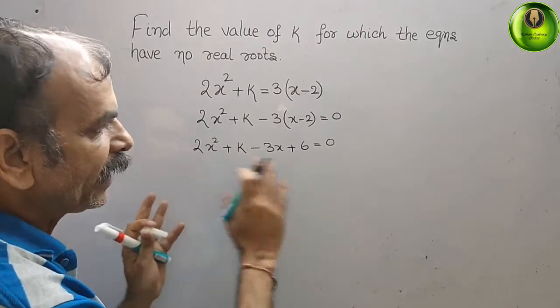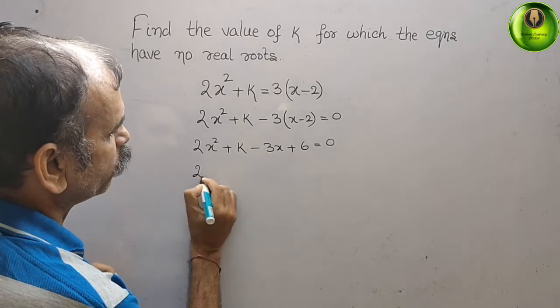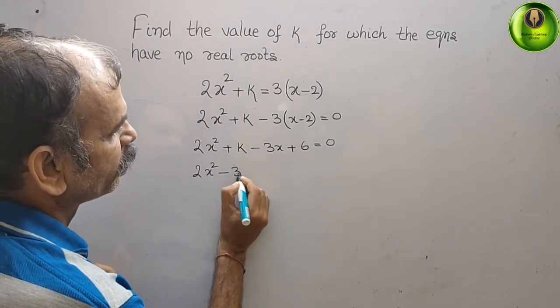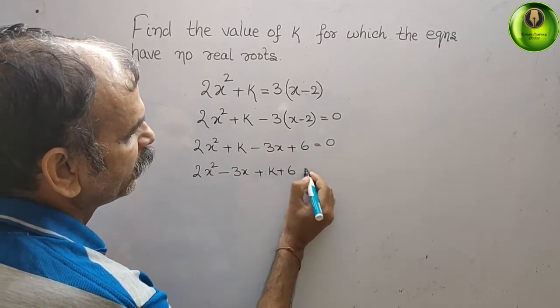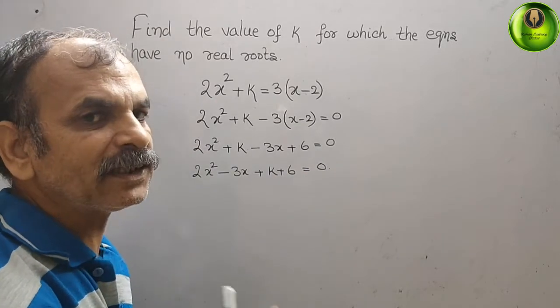Now just arrange them in standard form: 2x² - 3x + k + 6 = 0.